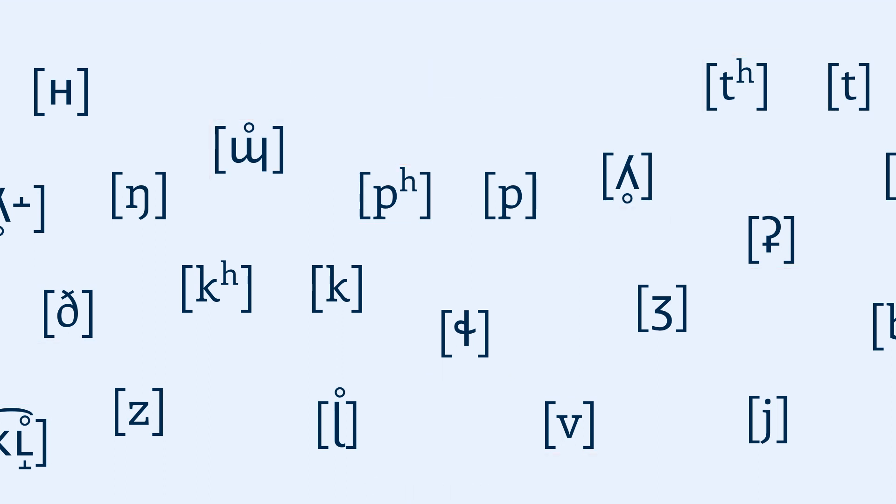The thing is, children don't initially show any preference for the sounds of this or that language. To them, the p in pin and the p in spin are two different p's. So how do children learn to discriminate these sounds? It's simple. They listen.